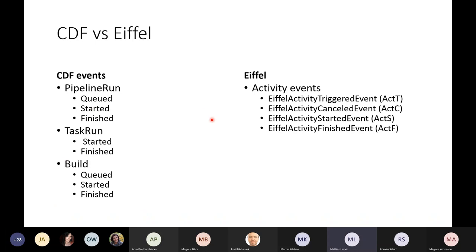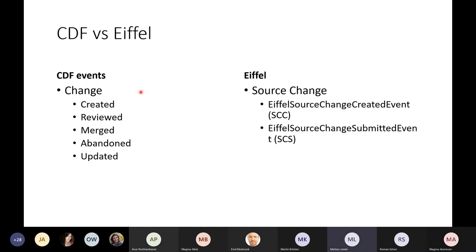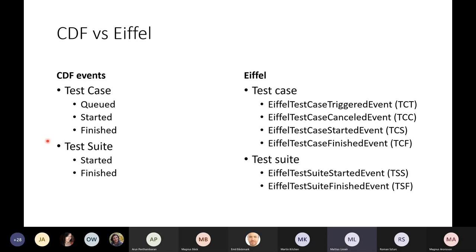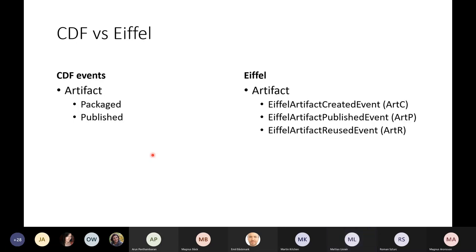Branch update is going to come a little bit later. When it comes to tests: Eiffel has test case triggered, canceled, started, and finished. Here we have queued, started, and finished. We also have test suites, which has been pretty much modeled from Eiffel — so there we have been adapting from Eiffel. For artifact events: in Eiffel we have the created event, the published event, and also the reviewed event. In CDF we call it packaged and published.